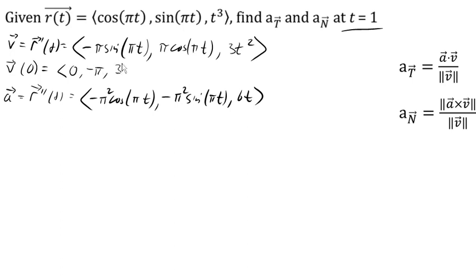The acceleration vector then, at 0, will be, again, sticking in 0 for t, cosine of 0, sorry, sticking in, why did I say 0? Let's correct that. We're evaluating at 1 here. Same problem here. We're sticking in 1 for t.